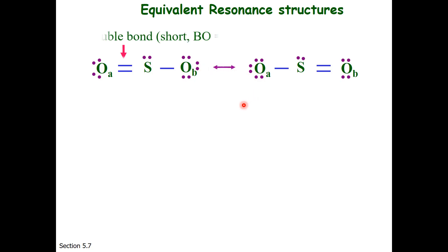So each structure has one double bond, which has a bond order of two, and is short compared to the single bond with a bond order of one. So when chemists went to look at the infrared spectra of this particular molecule, they expected two different sulfur-oxygen bonds, one with a short double bond and another with a long double bond.